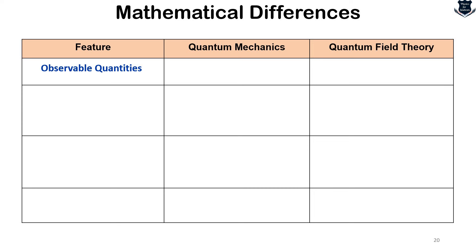Summarizing the mathematical differences: observable quantities in QM involve localized objects; in QFT they involve mathematical field objects filling all space-time. Interactions in QM are treated as perturbations to the Hamiltonian; in QFT interactions are inherent to the dynamics, described by Lagrangian and Hamiltonian formalisms. The vacuum in QM is simply the state with no particles; in QFT the vacuum is more complex, featuring vacuum fluctuations and virtual particle-antiparticle pairs — a dynamic entity. Techniques in QM rely heavily on linear algebra and differential equations; QFT additionally requires path integrals, Feynman diagrams, and renormalization.